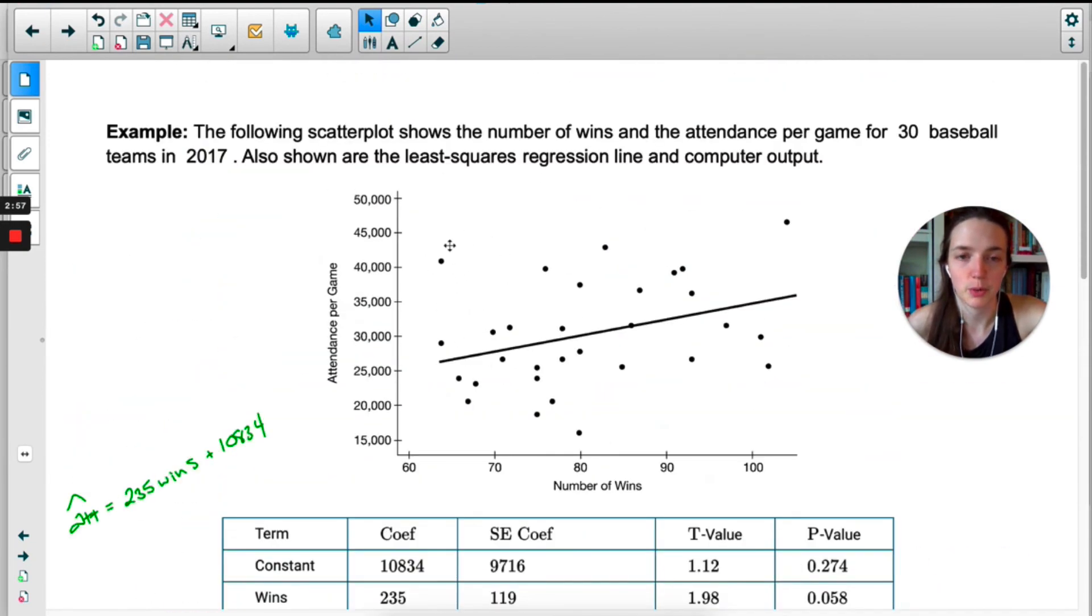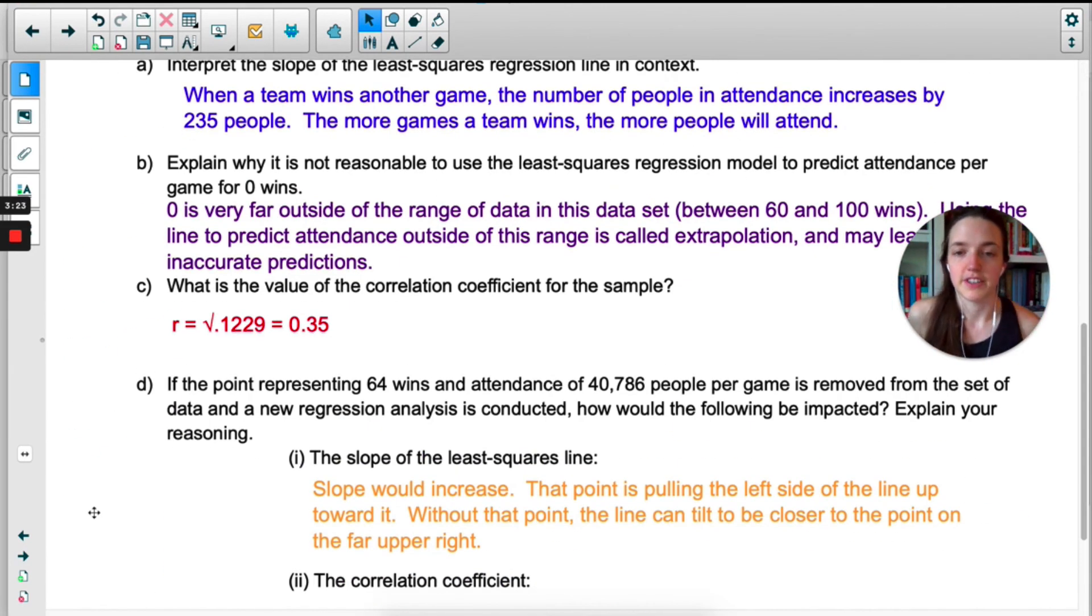So if we imagine taking this point away, we would actually be able to draw the line sloped up a bit more to kind of meet this point out here a little bit better. Because this point is so far away from the left side of the line, the left side of the line needs to move up to meet it. So if we get rid of it, now that left part of the line doesn't have to go up so far, so the slope can actually increase. They did say explain your reasoning, so this would be what I would write. The slope would increase. That point is pulling the left side of the line up towards it, so without that point, the line can tilt to be closer to the point on the far upper right.